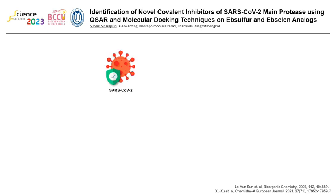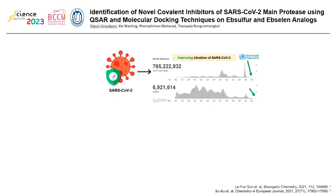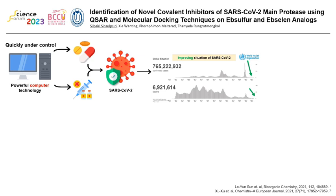For three years, the world has been suffering with the SARS-CoV-2 pandemic, but the number of infected cases and deaths are decreasing because we have medicine and vaccines to handle this situation in time. And what is the thing that helped us quickly get under control? That thing is powerful computer technology, which has many advantages such as low cost, saving time, and saving resources.